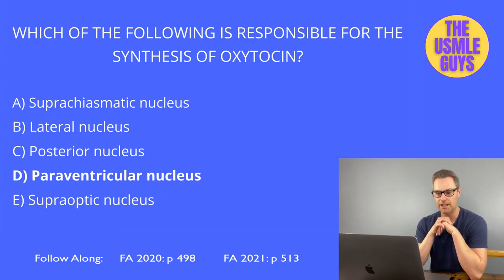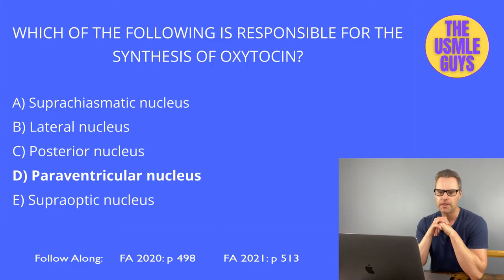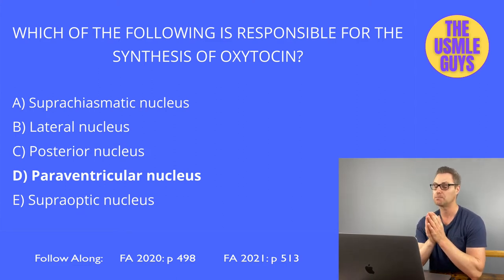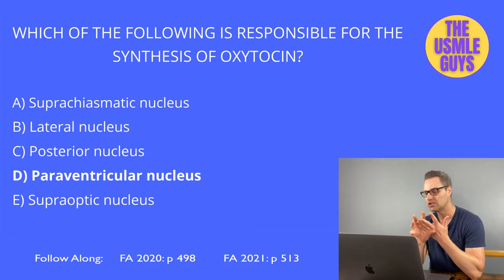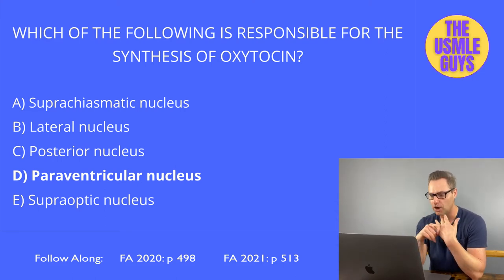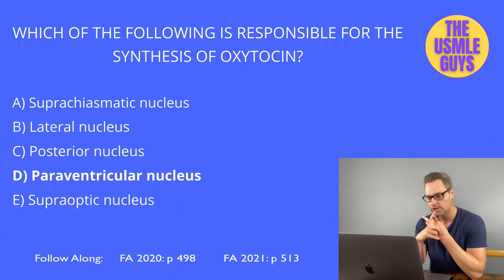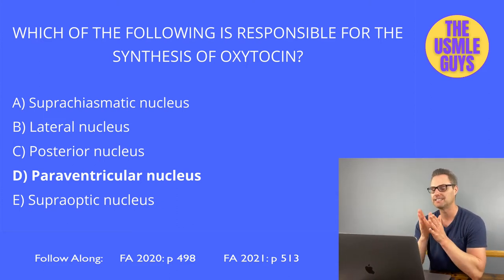Let's talk about the hypothalamus, an extremely important regulator of the body. It helps maintain homeostasis by regulating body temperature, thirst, water balance, controlling the pituitary, regulating hunger, the autonomic nervous system, and sexual urges — you can remember all of those with the mnemonic TAN HATS.